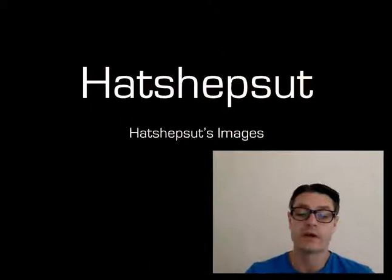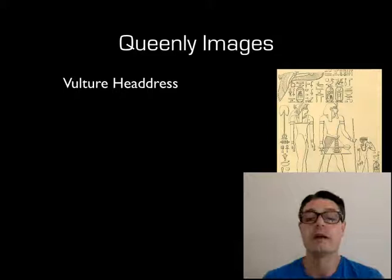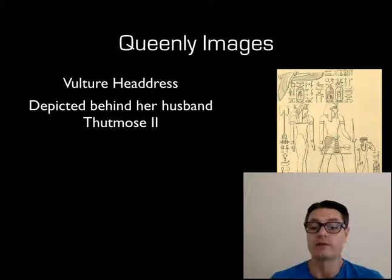We're going to start with Hatshepsut and the way she presented herself as a queen — we've covered this before, so I'll make this nice and quick. Again, the vulture headdress, the traditional trappings of a queen. She's wearing that in this scene where she's standing behind Thutmose II, which was customary and very much normal during this time period in an offering scene to Amun.